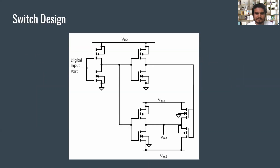Here the value that would appear would be 1, and here the value that would appear would be 0. And as it is 1, the NMOS would be closed and the PMOS would be open.